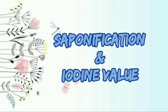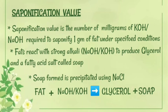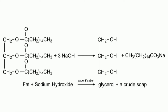The next property covers saponification value and iodine value. Saponification value is the number of milligrams of potassium hydroxide or sodium hydroxide required to saponify 1 gram of fat under specified conditions. When fats react with a strong alkali such as KOH or NaOH, it results in the formation of glycerol and a fatty acid salt called soap. The soap formed is precipitated using NaCl — that is, fat plus NaOH or KOH gives glycerol plus soap.